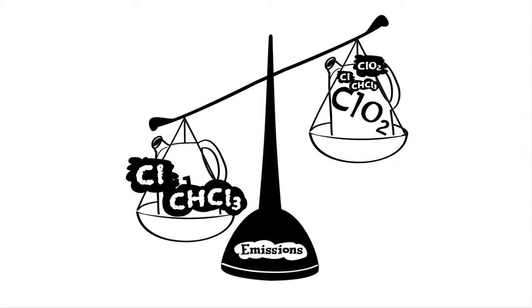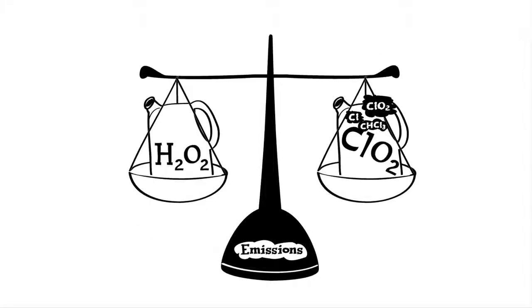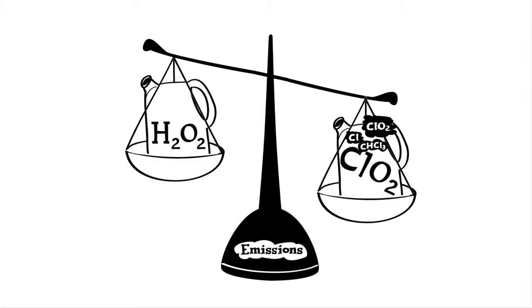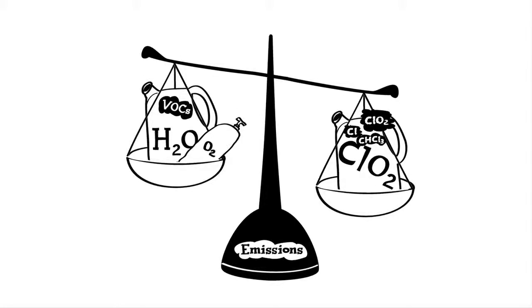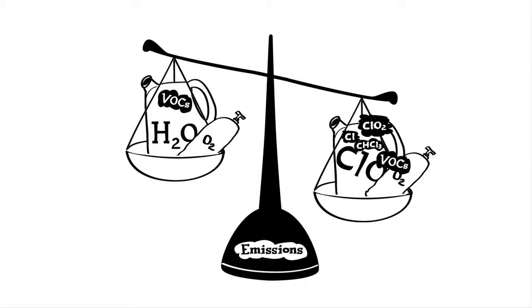However, it does lead to a slight increase in emissions of chlorine dioxide. TCF bleaching eliminates all chlorine-related emissions. That said, the use of oxygen delignification, a prerequisite for TCF bleaching, which significantly reduces the need to bleach the pulp, can increase the emissions of volatile organic compounds. When used with ECF bleaching, oxygen delignification similarly increases VOC emissions.